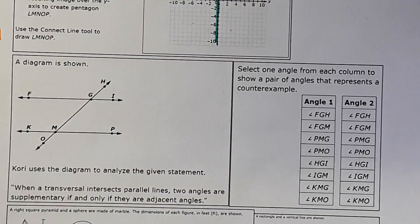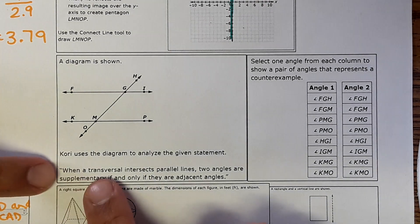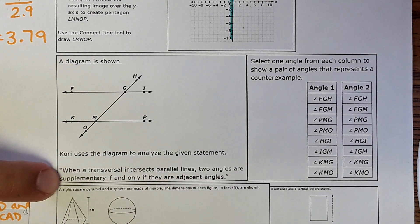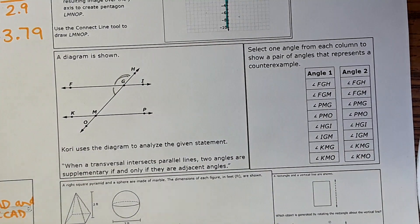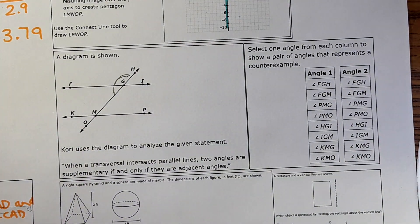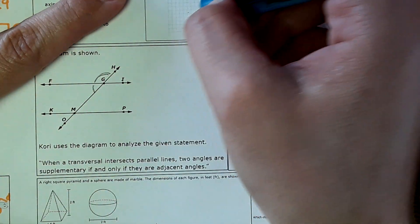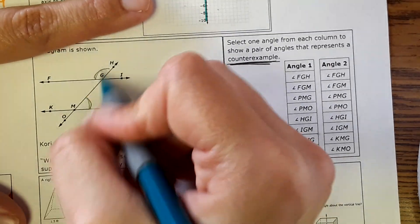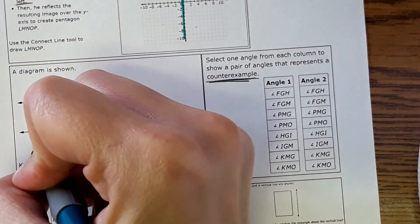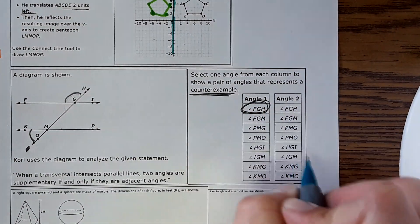Next, this one you guys saw yesterday as well. It shows parallel lines and a transversal. It says right here, when a transversal intersects parallel lines, two angles are supplementary if and only if they are adjacent angles. Adjacent angles are right next to each other, and yes, two adjacent angles are supplementary, but it's not the only set of supplementary angles that are here. So it asks for a counter example. Two angles that are supplementary that aren't necessarily adjacent. Last time we chose this one and this one, which are supplementary. Let's choose a different pair that's also correct. Maybe this one and this one this time. These two angles are supplementary and they aren't adjacent, so FGH and KMO.